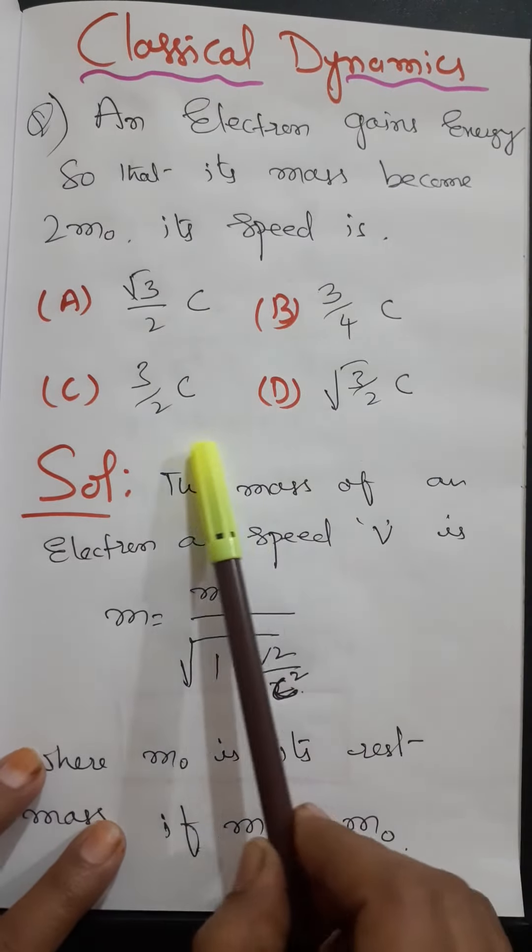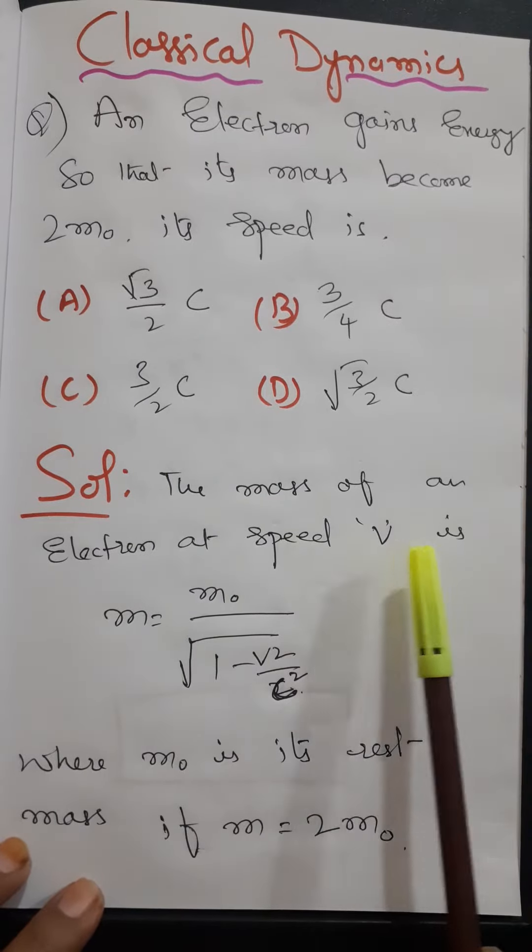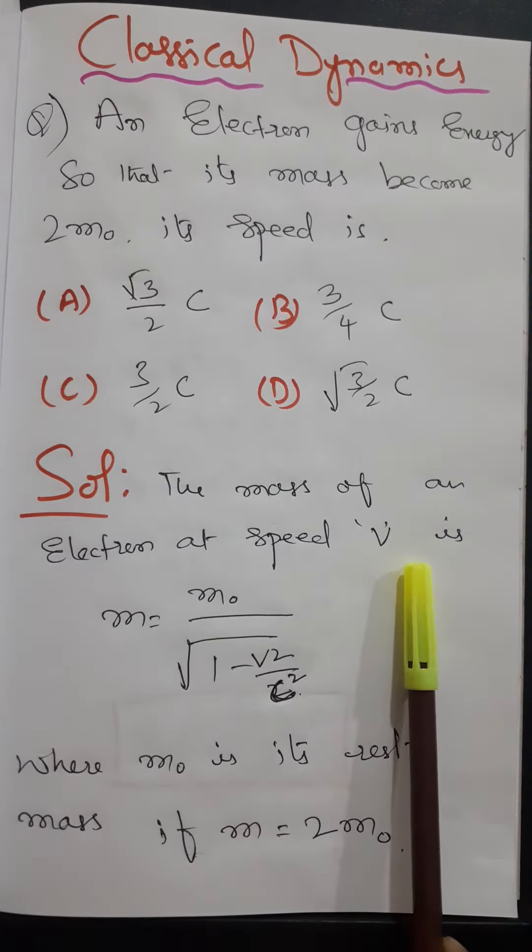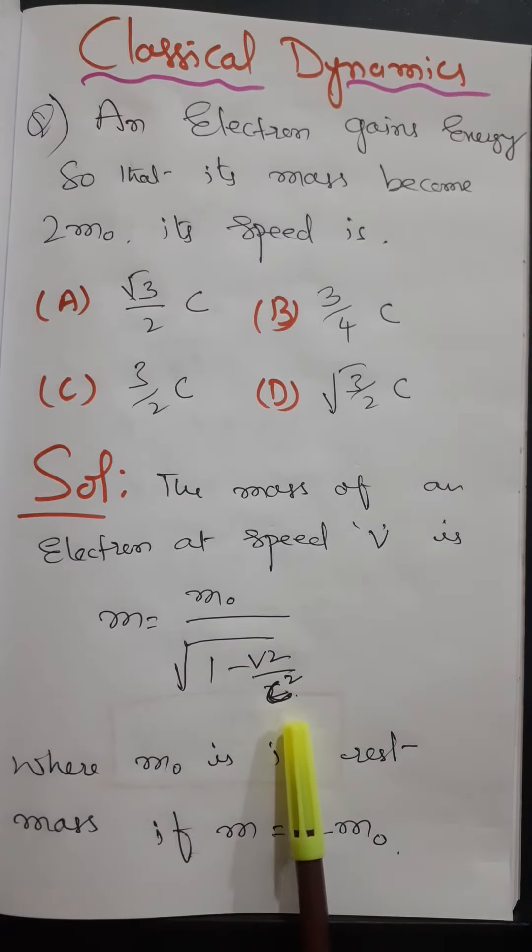So here four options are there. The solution for this question is the mass of an electron at speed v. According to the relativity theory, we know that m equals m0 divided by square root of 1 minus v squared by c squared, where